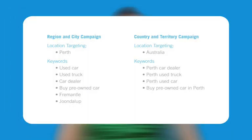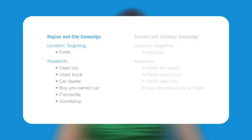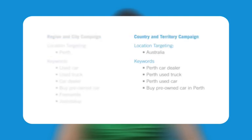Include region and city names in your ad text to reinforce the local nature of your product or service. This way if your ad appears for a user uninterested in the targeted region the user won't click your ad. Here's an example of a used car dealer in Perth that has created both regional and country campaigns. Campaign 1 is targeted directly to the city of Perth. Campaign 2 is targeted toward Australia but also Perth because its keywords contain the city name Perth.